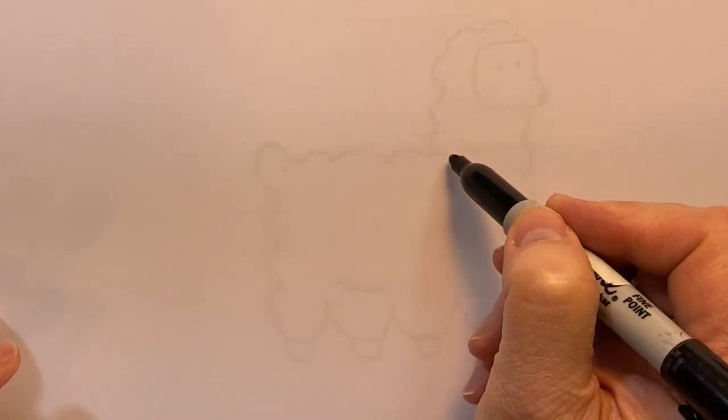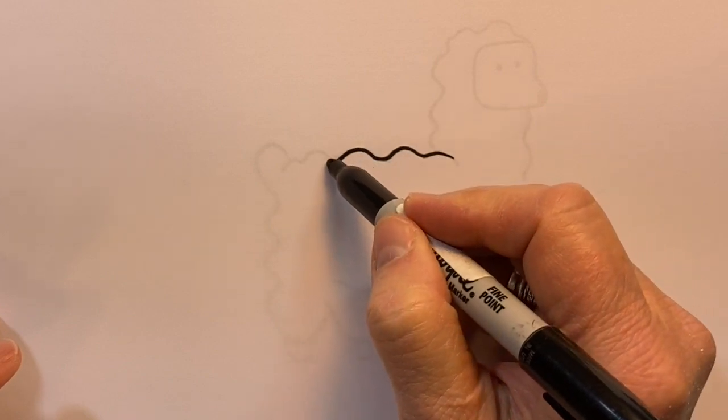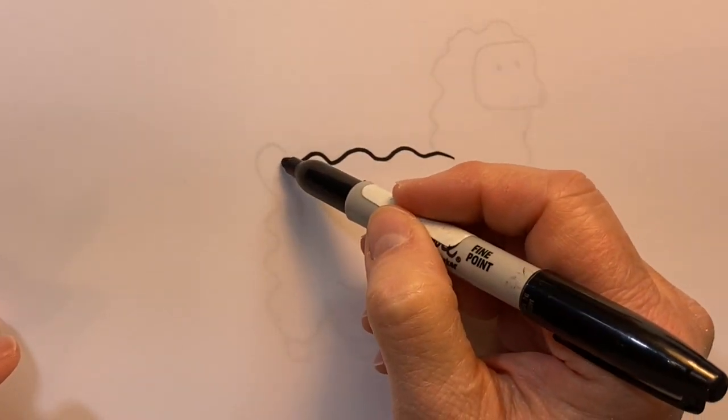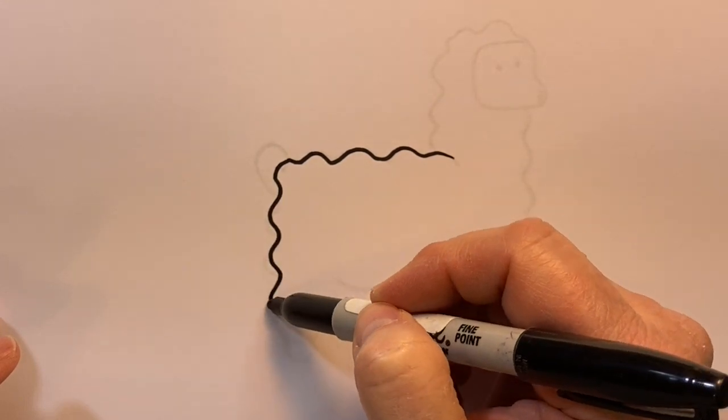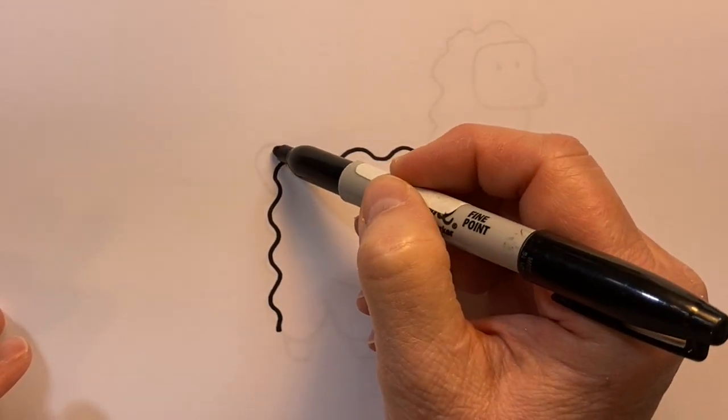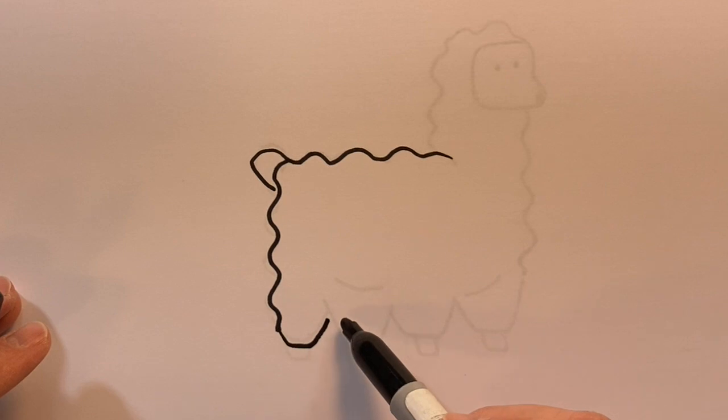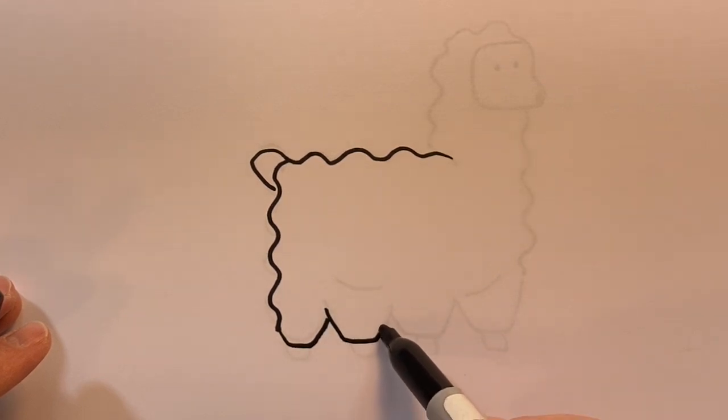I'm going to first create a horizontal wavy line for our llama, then bring that down the side with a wavy line and attach a little tail there. The legs will just be curved or slanted lines with a horizontal line.